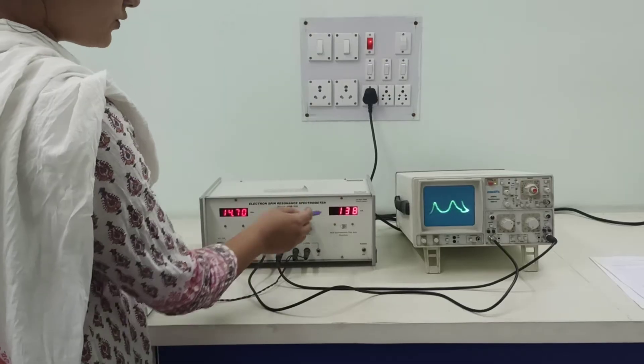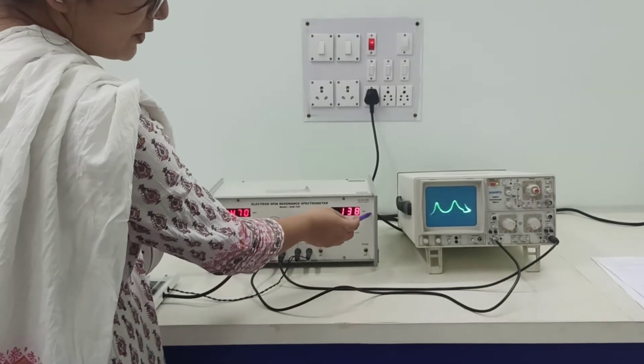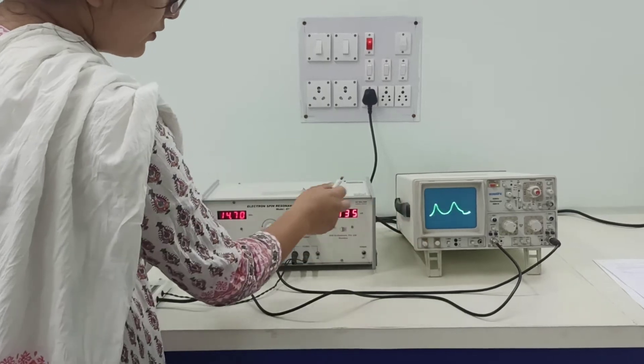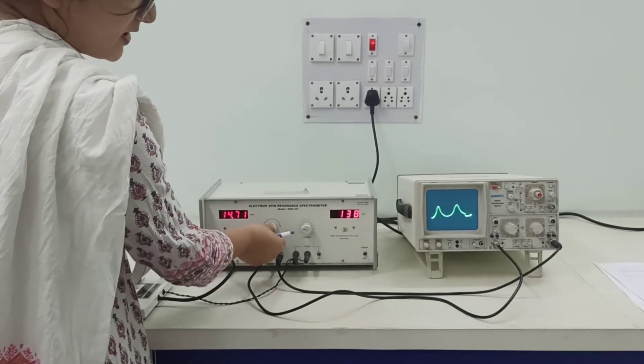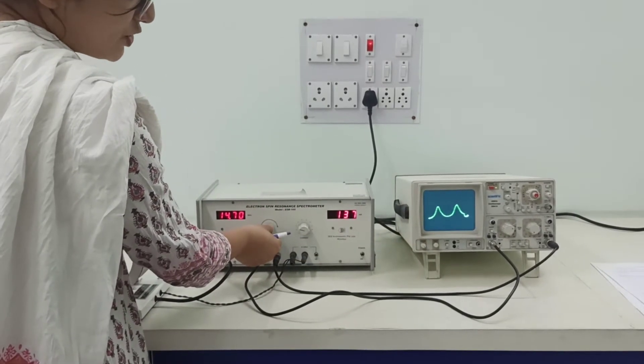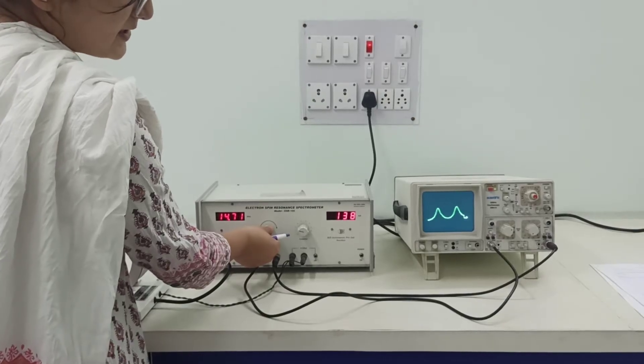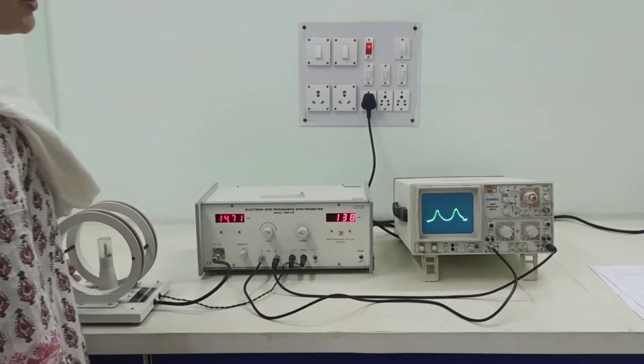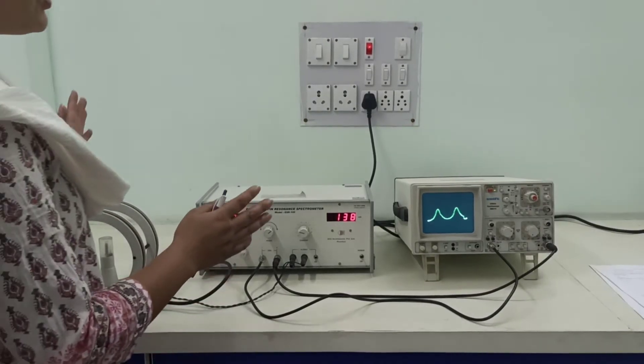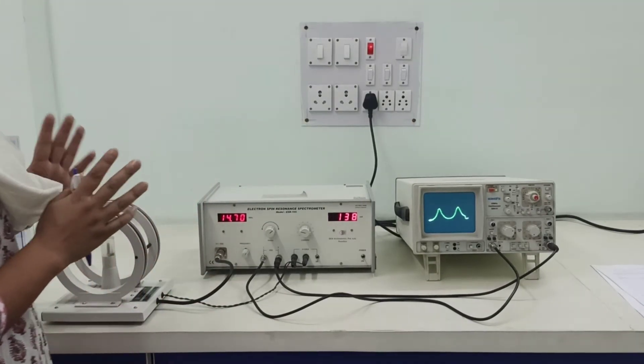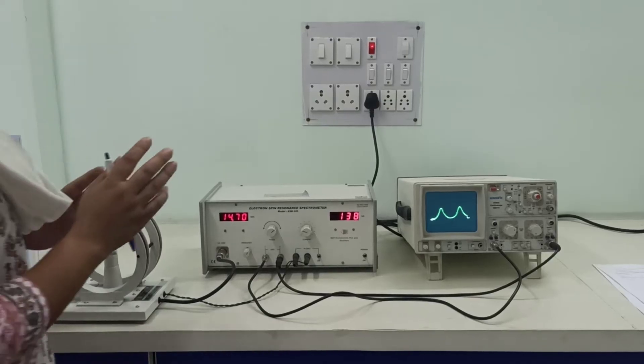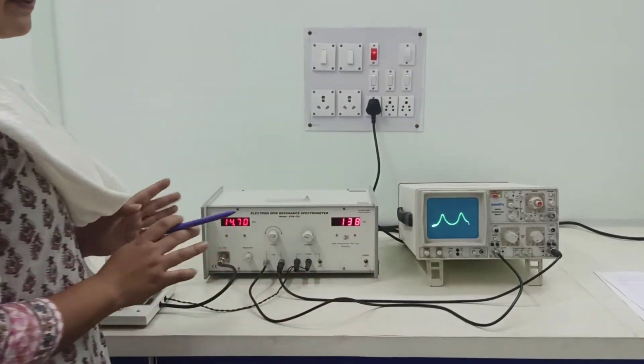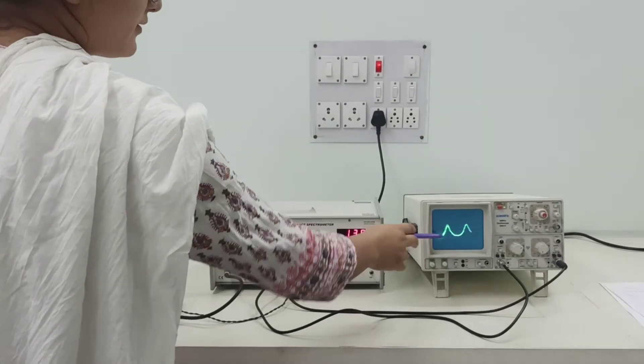So for 130 milliampere of current, we see four different peaks. Now, making use of this phase adjuster, we have to make sure that these two peaks, they overlap back to back, something like this. You should try to make the best possible overlap. They will not overlap exactly, but a rough overlap is fine. Something like this is fine enough.